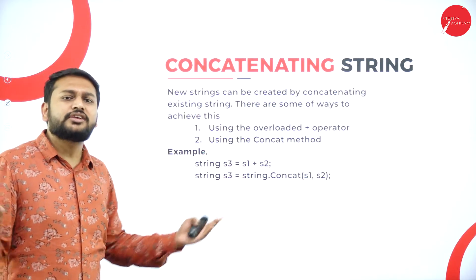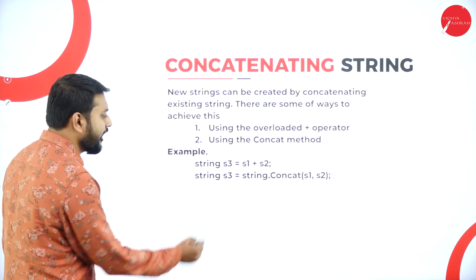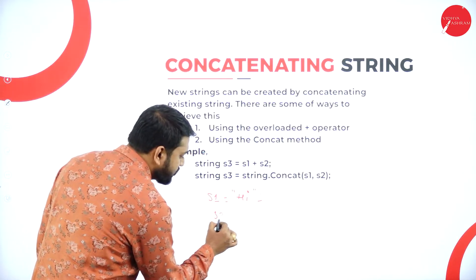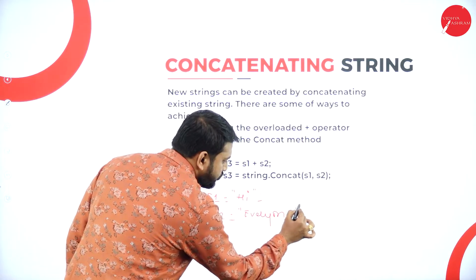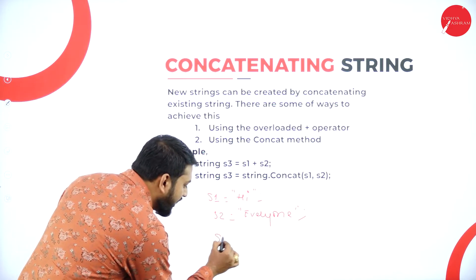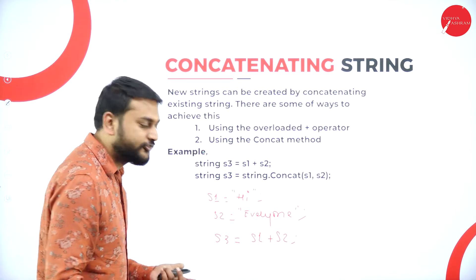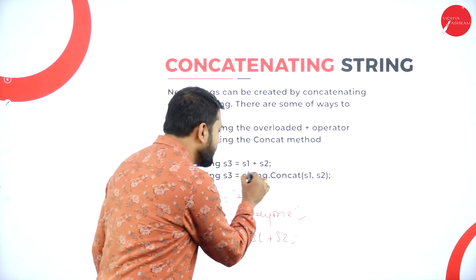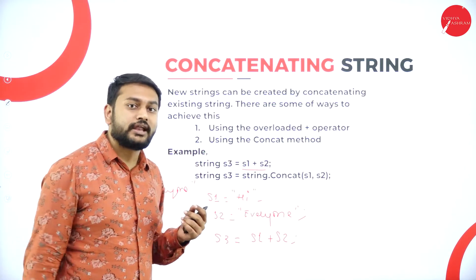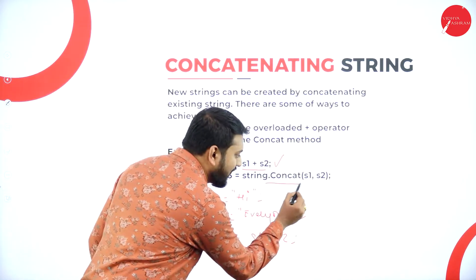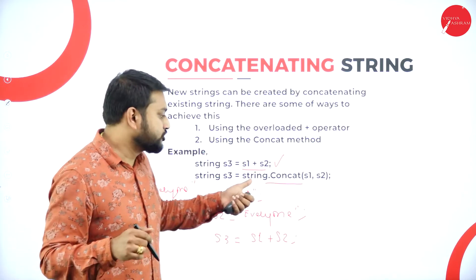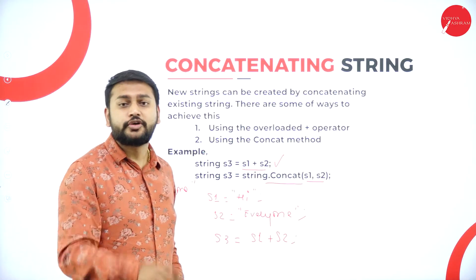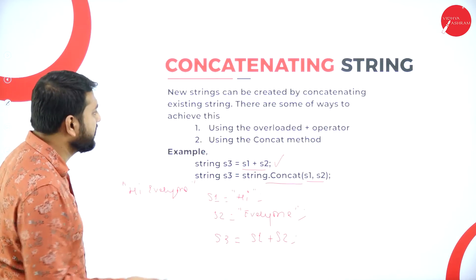The third method is concatenation — adding two strings together. For example, if s1 has 'hi' and s2 has 'everyone', then s3 = s1 + s2 gives 'hi everyone'. Another method is using the predefined concat function: String.Concat(s1, s2), which performs the same concatenation.